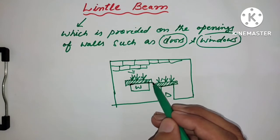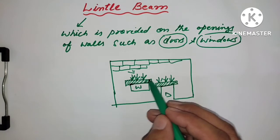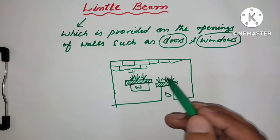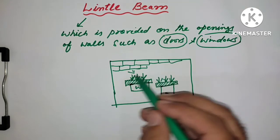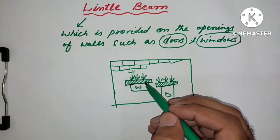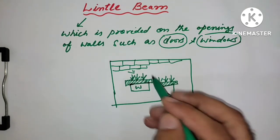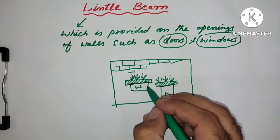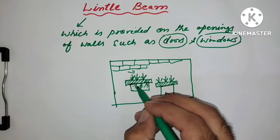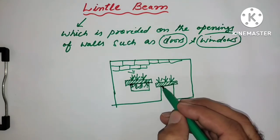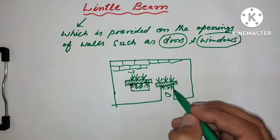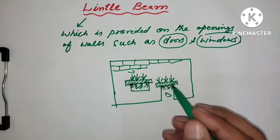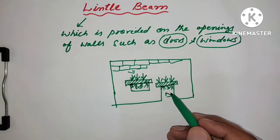So to resist this load, we provide lintel on door and window. When load comes on the window and door, this lintel, RCC lintel, will resist the load. Due to this lintel, door and window will not break and can bear the load of block masonry or brick masonry.